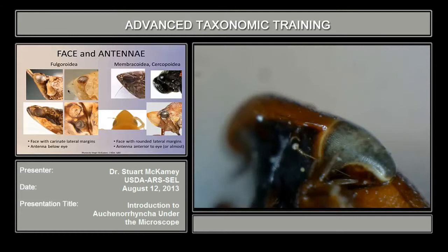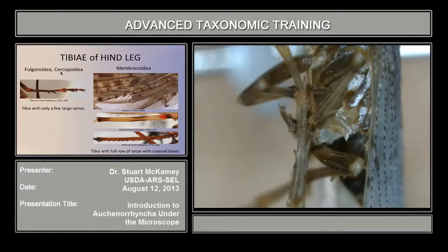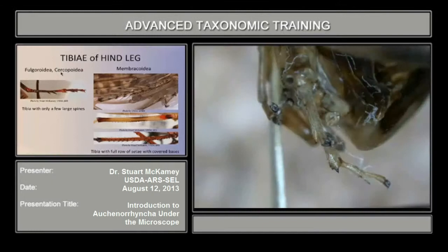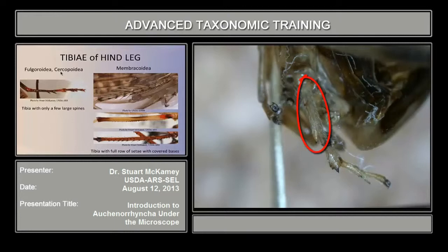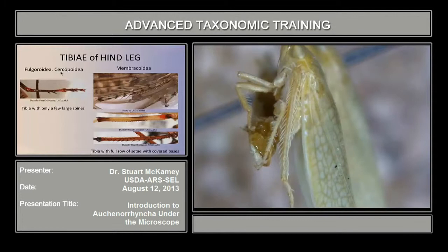Going to the third slide, we'll look at the hind tibia, first of planthoppers and froghoppers. In planthoppers, the hind tibia has just a few large spines. In froghoppers, the hind tibia also has just a few large black-tipped spines along it. That condition distinguishes it from the hind tibia with a row of many spines — sometimes they're fairly large, but there are always many of them along the hind tibia.